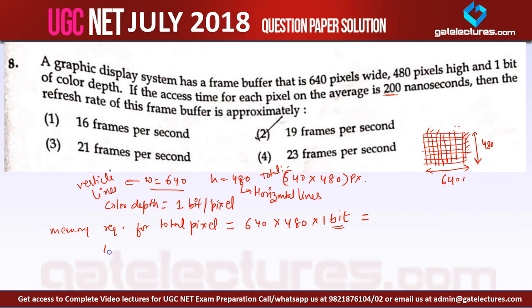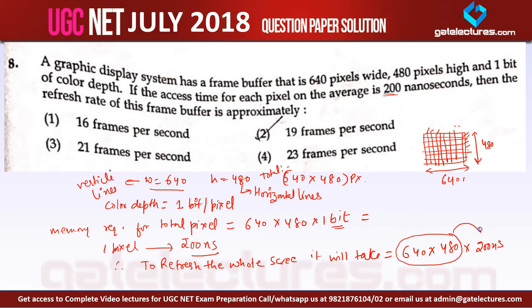And we know that 1 pixel takes 200 nanoseconds to refresh. Therefore to refresh the whole screen, it will take a total of 640 cross 480 cross 200 nanoseconds, where this is representing the total number of pixels and this is representing for every pixel this much time is required.